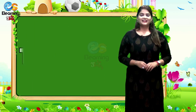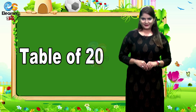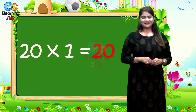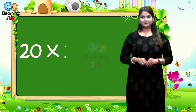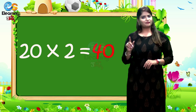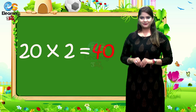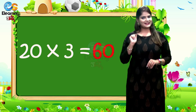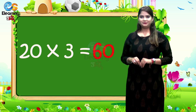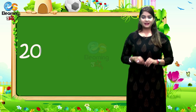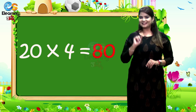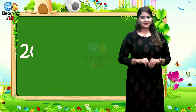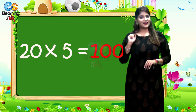Table of 20. 20 times 1 is 20. 20 times 2 is 40. 20 times 3 is 60. 20 times 4 is 80. 20 times 5 is 100.